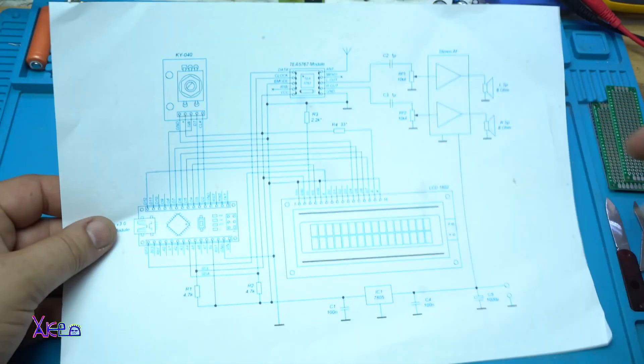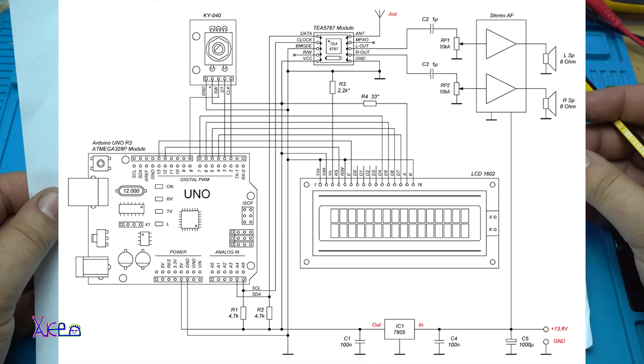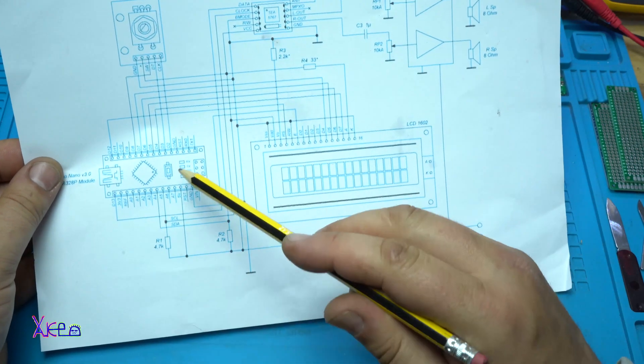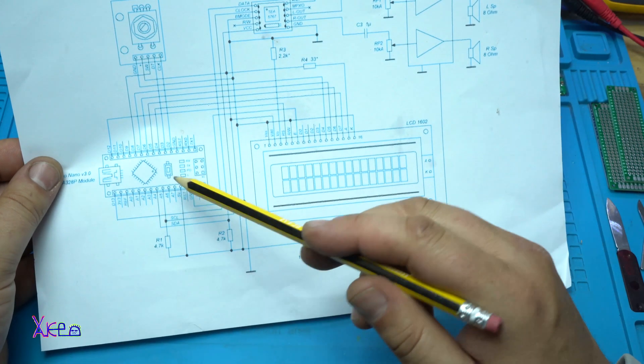Okay, here is the schematic for making the digital stereo radio receiver using Arduino. In this case it's Arduino Nano.